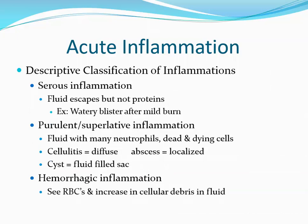Inflammation is classified based on the type of fluid exudate and the severity of injury. Serous inflammation involves only fluid escaping, not proteins — a typical response to mild injury such as a watery blister after a minor burn. Purulent or suppurative inflammation is due to a more serious injury or potent toxin; the fluid contains large numbers of neutrophils and necrotic debris, forming a thick fluid called pus. It is called cellulitis if diffuse and an abscess if localized. Hemorrhagic inflammation occurs with very severe injury, with red blood cells and cellular debris present in the fluid.